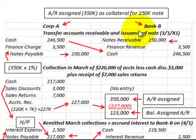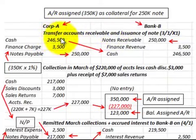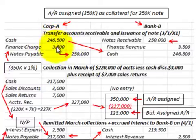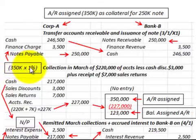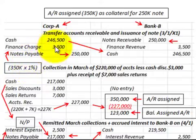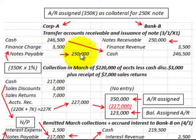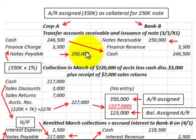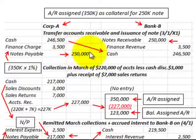For the initial transfer of accounts receivable and issuance of the note on 1/31/X1, Corporation A receives cash of $246,500 and records a finance charge expense of $3,500. That $3,500 is based on the $350,000 of assigned accounts receivable times the 1% charge, equaling $3,500. The finance charge reduces the cash received, and Corporation A records a notes payable of $250,000 due to Bank B.